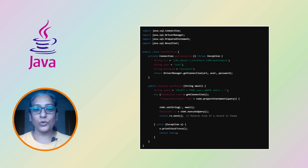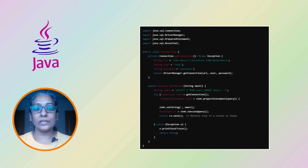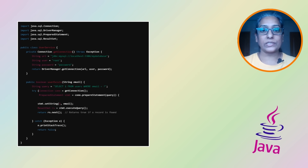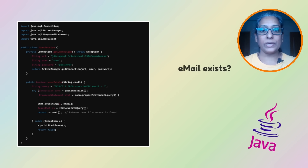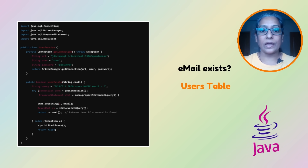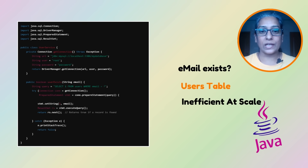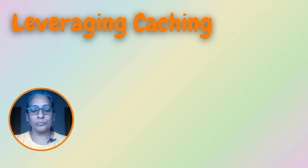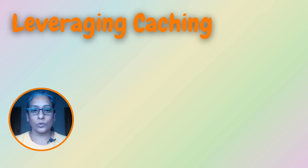Here is how you might implement this direct database query approach in Java. This simple query checks if an email exists in our user table. It works fine, but as your system scales, it starts to get a bit heavy. So direct queries might not be the best option at scale.